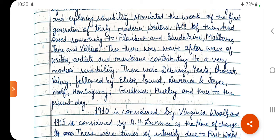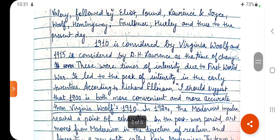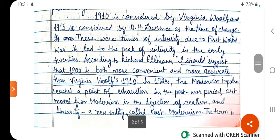This is a long list of writers who show Modernism in their work. 1910 is considered by Virginia Woolf and 1915 is considered by D.H. Lawrence as the time of change — times of intensity due to the First World War, which is connected to the major changes. According to Richard Ellman, 1900 is both more convenient and more accurate than Virginia Woolf's 1910. In the 1920s, the modern impulse reached a point of exhaustion.